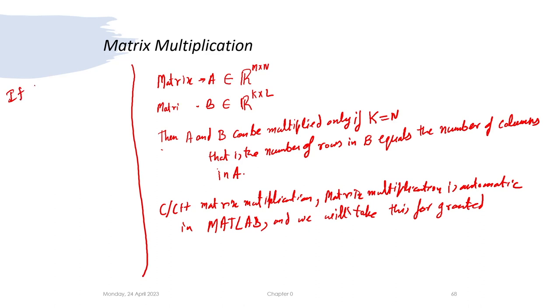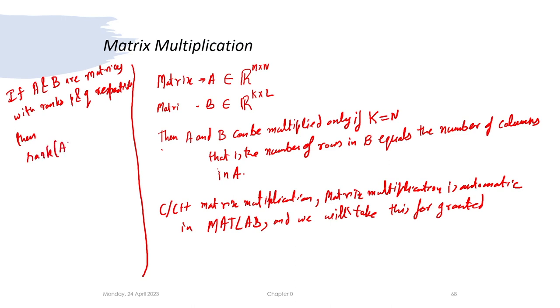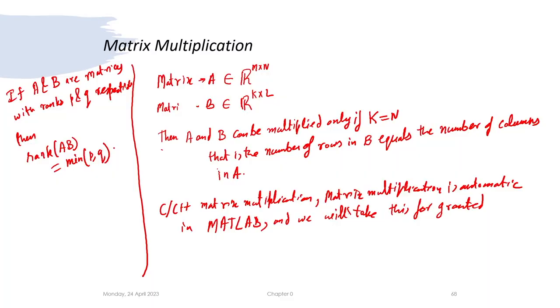If A and B are matrices with ranks p and q respectively, then the rank of their product AB equals the minimum of the two ranks — that is, rank(AB) = min(p, q). With that said, let us look at inner and outer products.